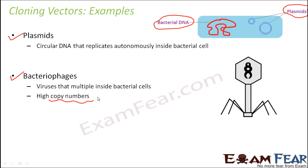Bacteriophages give really high copy numbers. What are copy numbers? When we talk about replication, it is all about creating exact copies — how many copies are being created is the copy number. For example, if you have an original copy of notes and you get one photocopy, your copy number is one. But if you make 10 copies of the same notes, your copy number increases. So depending upon how many copies are being created, the copy number is assigned. Bacteriophages normally have very high copy numbers because they create multiple copies of themselves.